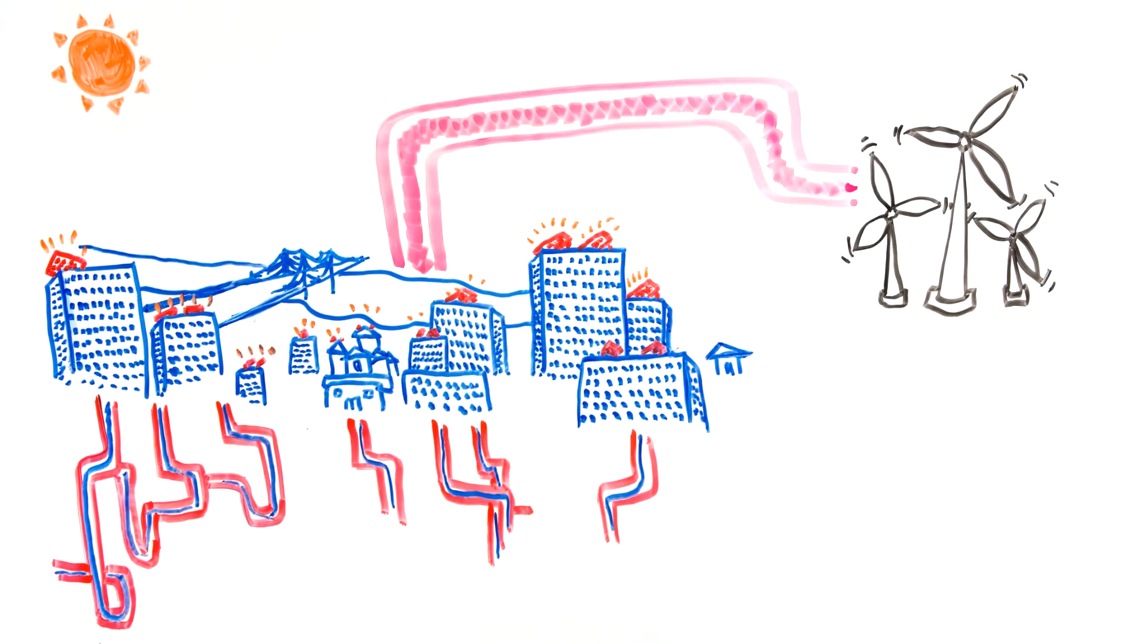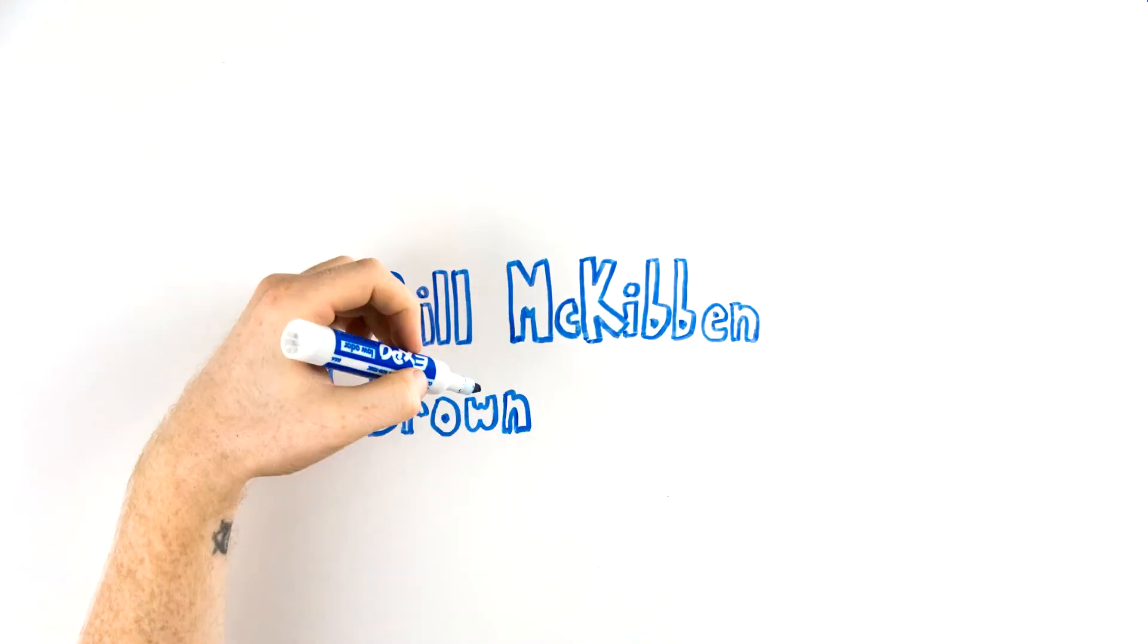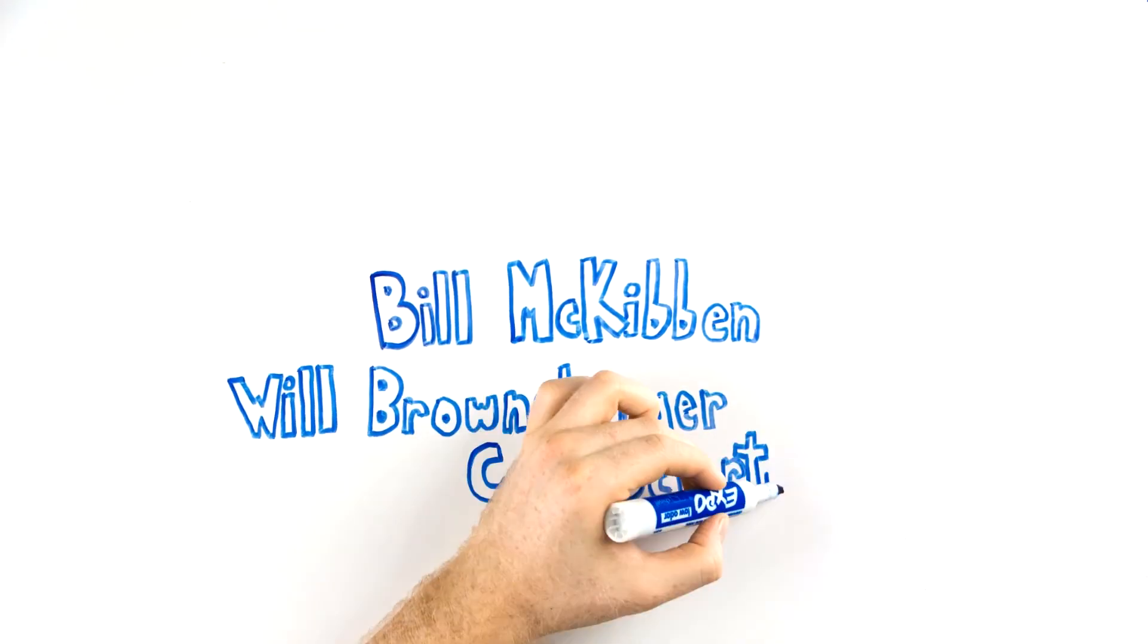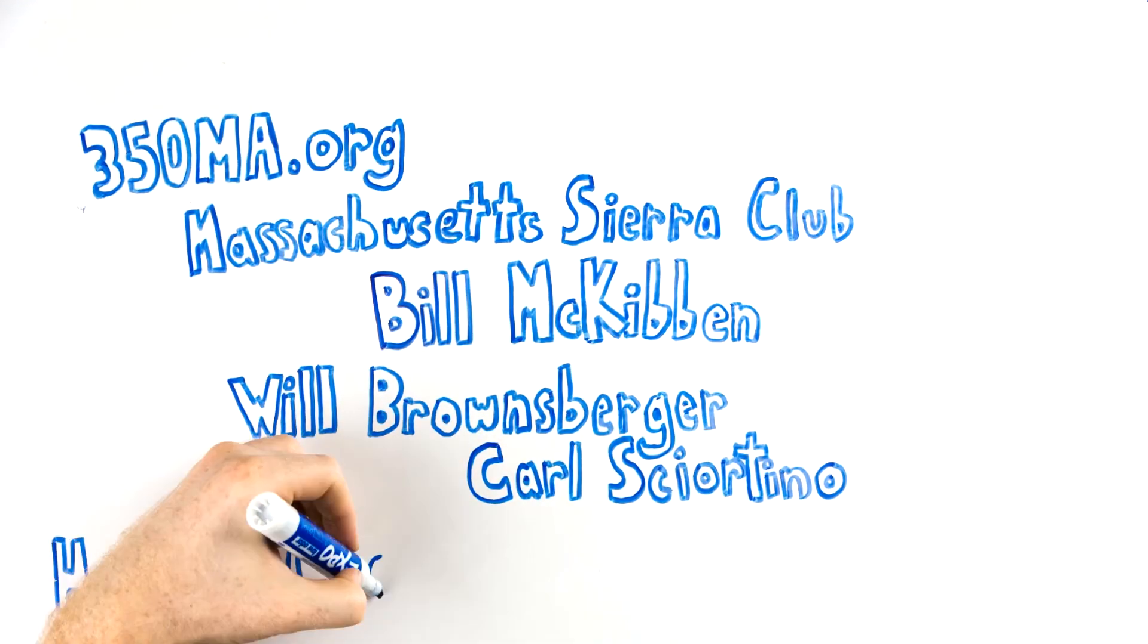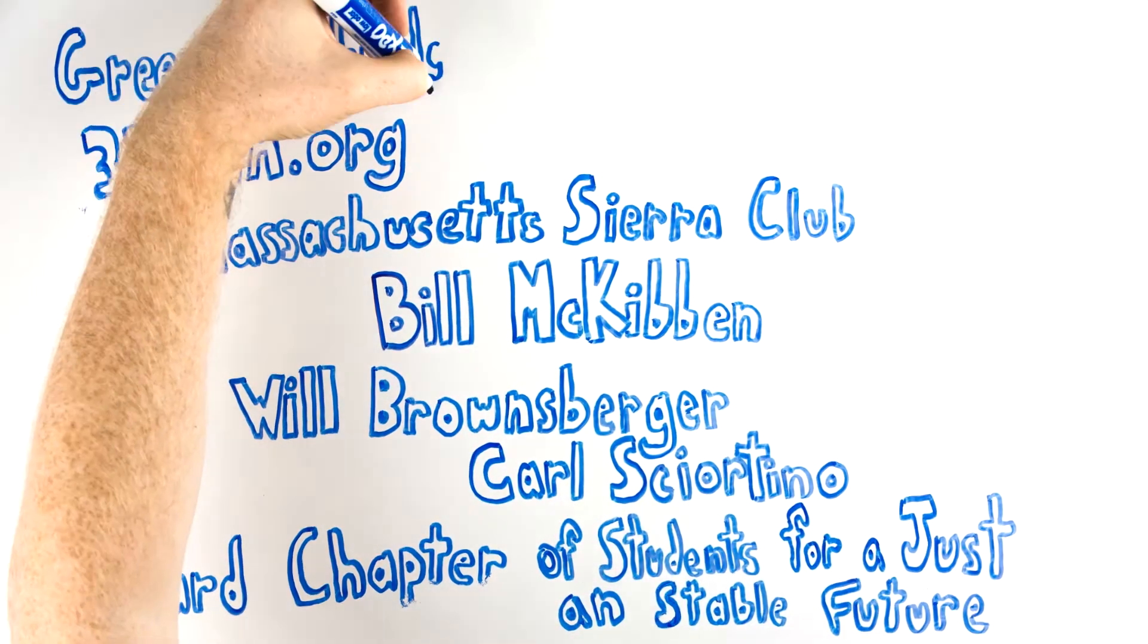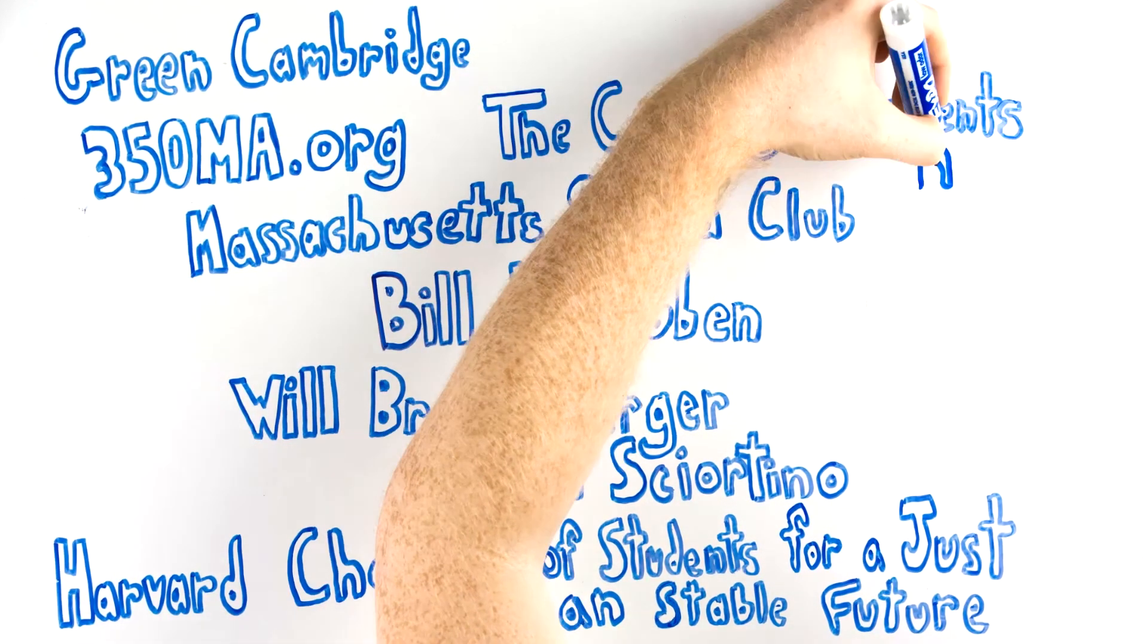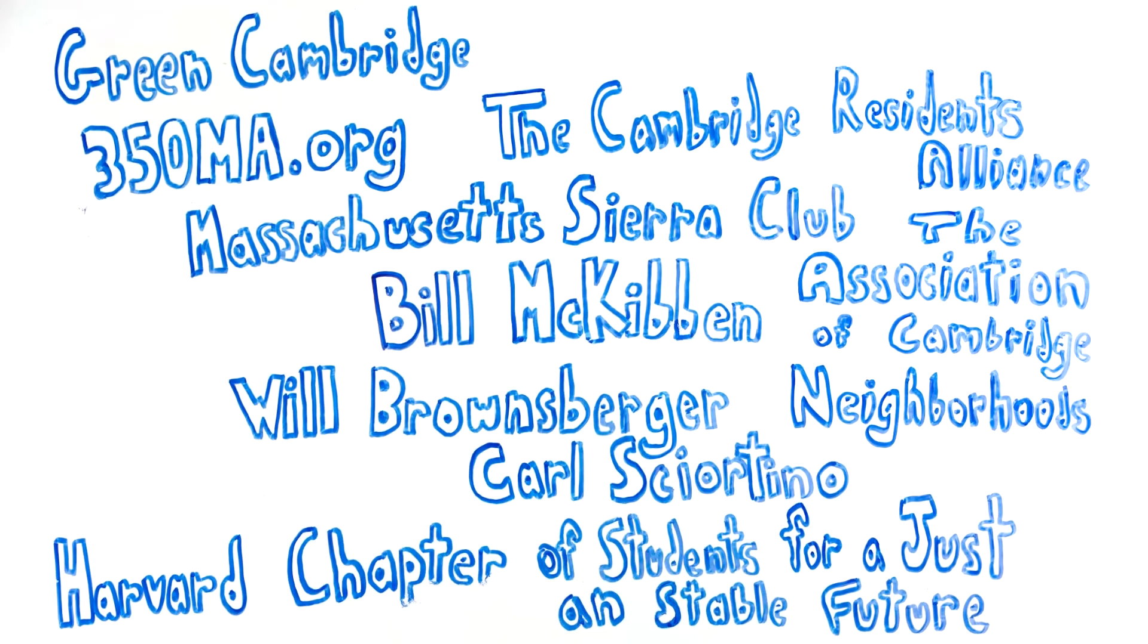Net Zero has already been endorsed by Bill McKibben, State Senator Will Brownsberger, State Representative Carl Shortino, the Massachusetts Sierra Club, the Cambridge Node of 350MA.org, the Harvard Chapter of Students for a Just and Stable Future, Green Cambridge, the Cambridge Residence Alliance, the Association of Cambridge Neighborhoods, and over 200 Cambridge residents and local experts.